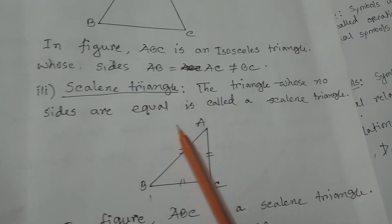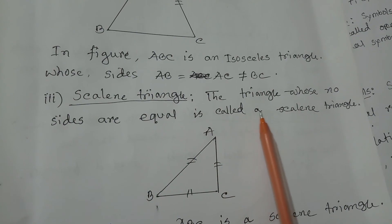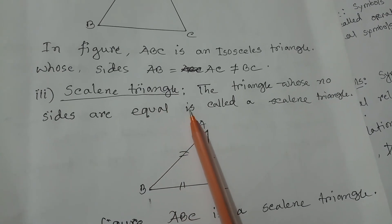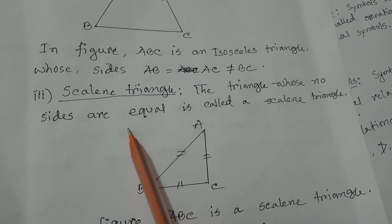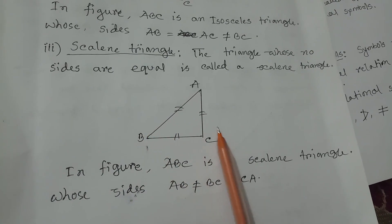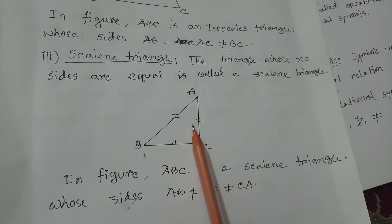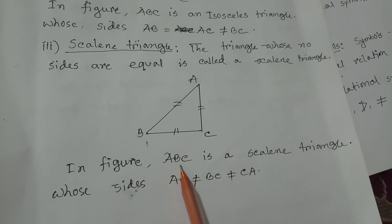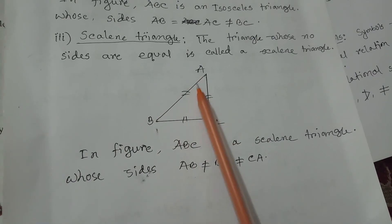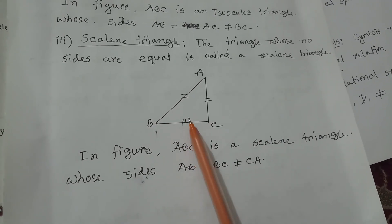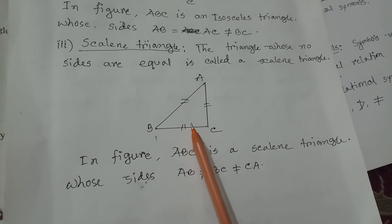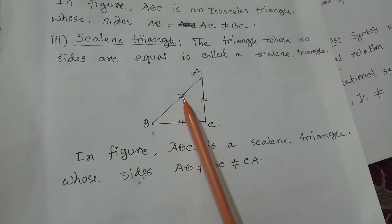Next one, number three: Scalene Triangle. The triangle whose no sides are equal is called a Scalene Triangle. Here, ABC is a Scalene Triangle and these three sides are not equal to each other. In the figure, ABC is a Scalene Triangle whose sides AB, AC, and BC are all different — the three measurements of these sides are different.